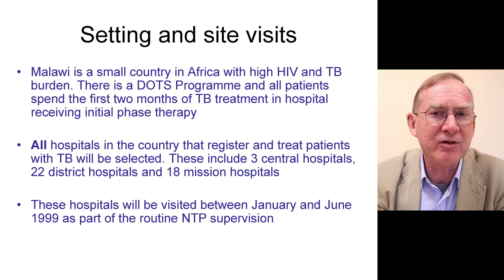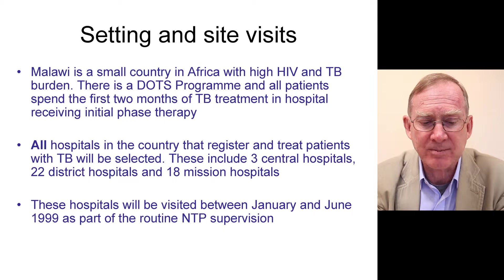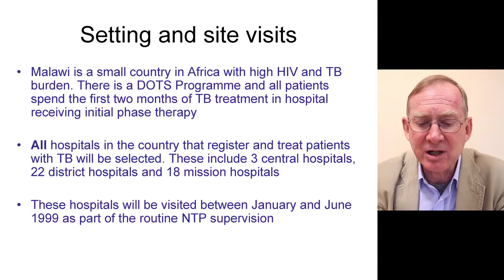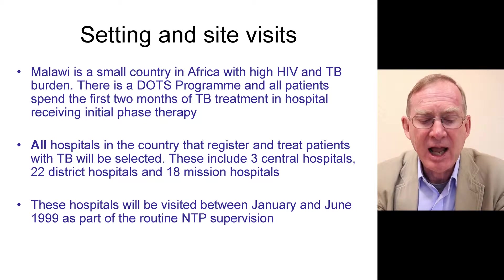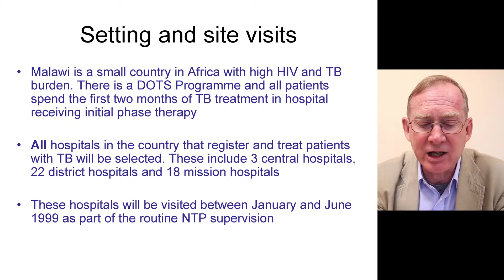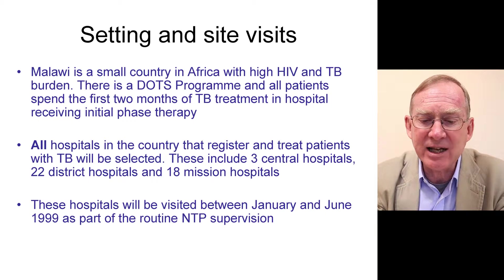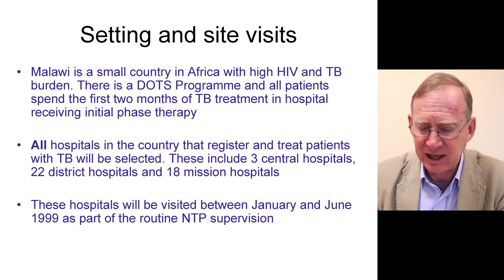That is a very important piece of information — many of our patients are captive in hospital for the first two months of their treatment. All hospitals in the country that register and treat patients with tuberculosis were selected, making this a national sample. These hospitals include three central hospitals, 22 district hospitals, and 18 mission hospitals, visited between January and June 1999 as part of routine national TB programme supervision.